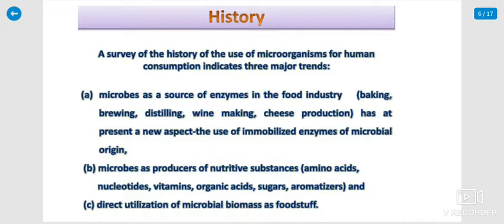SCP — single-cell protein — has three consumption categories. First, microbes as sources of enzymes for the food industry: baking, brewing, distilling, wine making, cheese making, etc. Second, microbes as producers of nutritive substances like amino acids, nucleotides, vitamins, organic acids, sugars, and aromatizers. Third, direct utilization of microbial biomass as foodstuff.